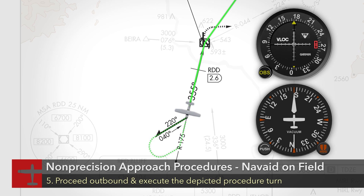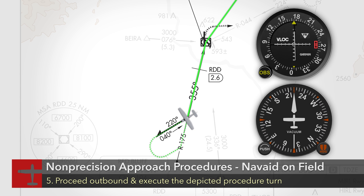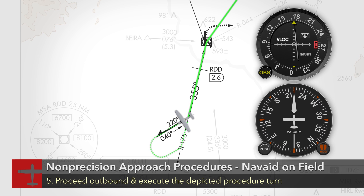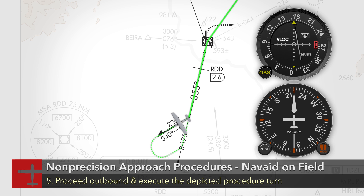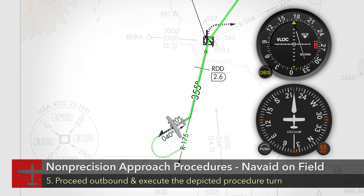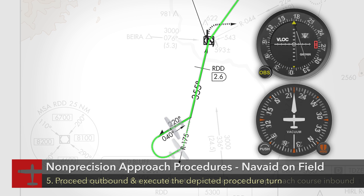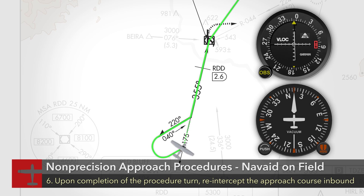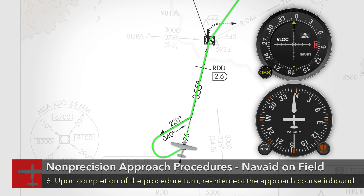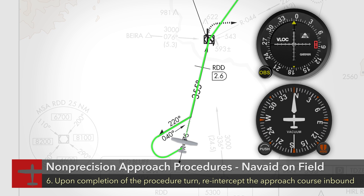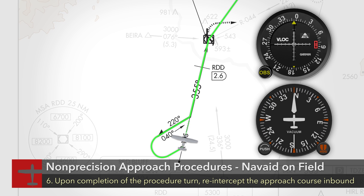Proceed outbound as determined in the approach brief to complete the approach profile. At the proper point, execute the procedure turn depicted on the instrument approach chart. Upon completion of the procedure turn, re-intercept the approach course inbound.